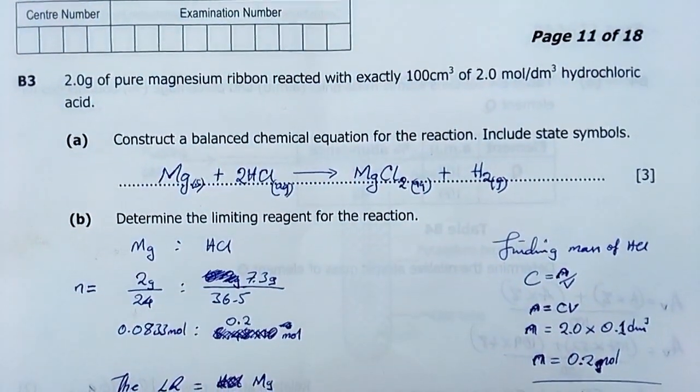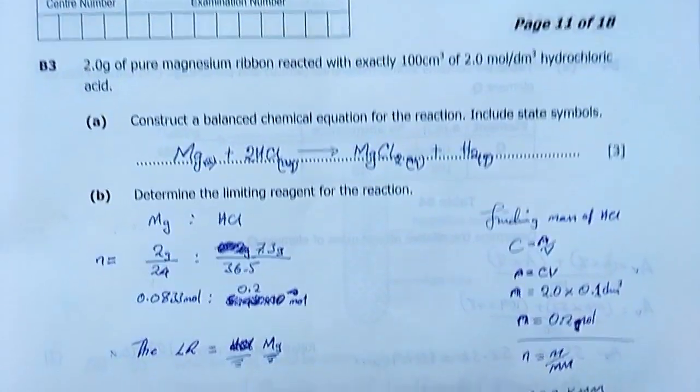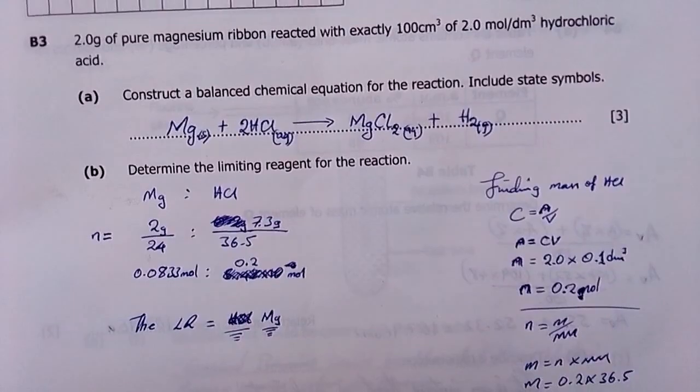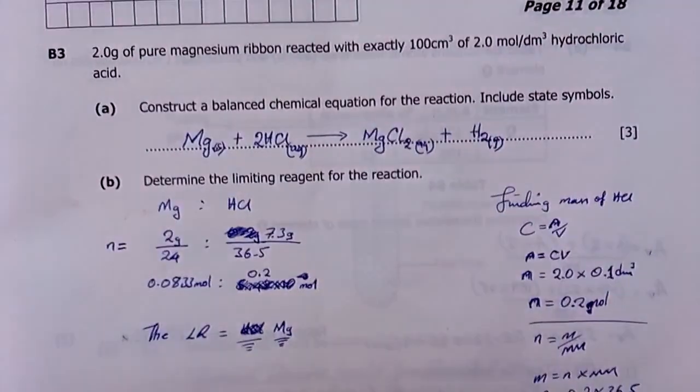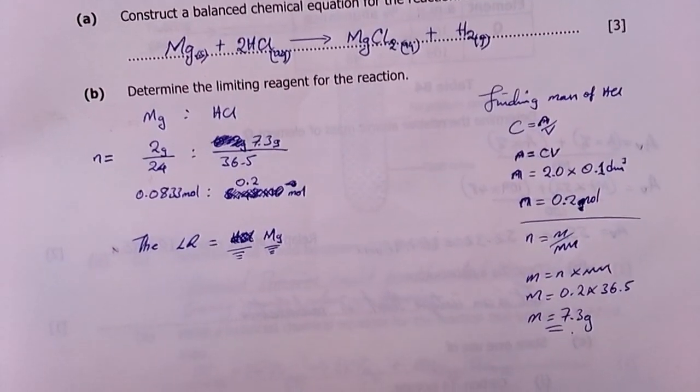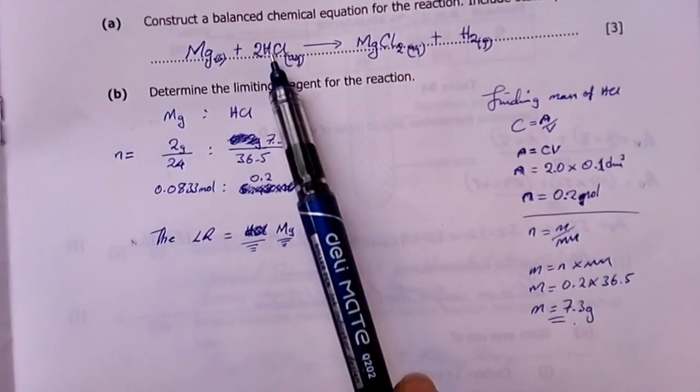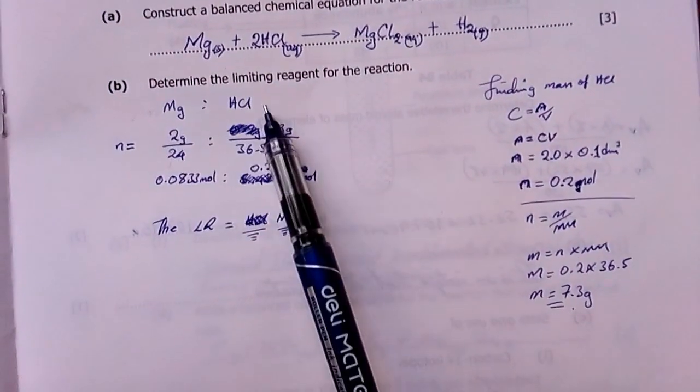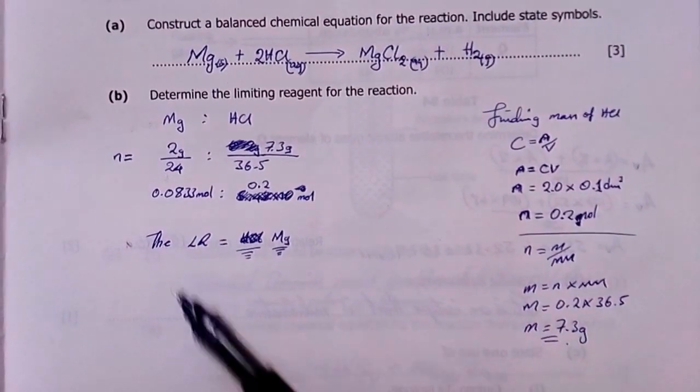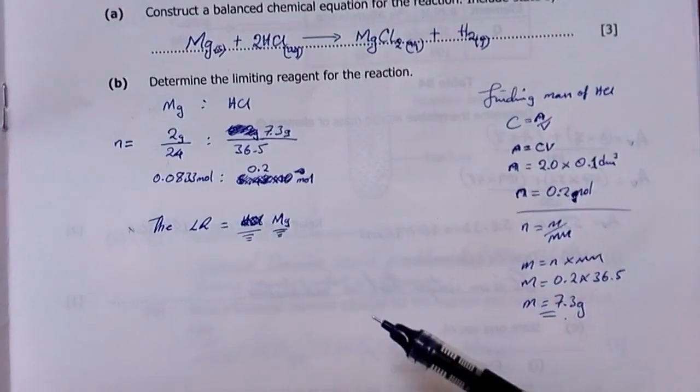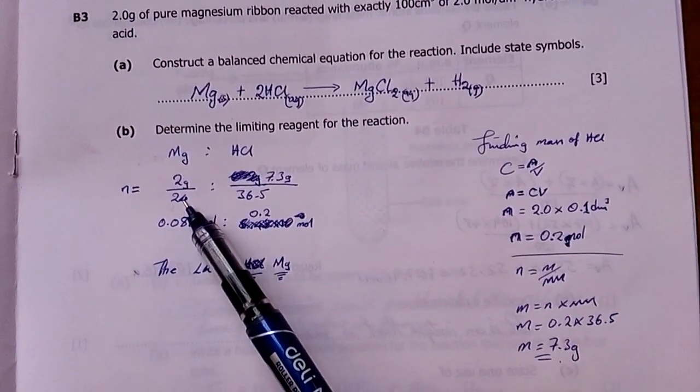The question reads: 2 grams of pure magnesium ribbon reacted with exactly 100 cubic centimeters of 2 molar hydrochloric acid. Construct a balanced chemical equation for the reaction. Include state symbols. Mg + 2HCl → MgCl₂ + H₂. Magnesium ribbon is solid, HCl is aqueous, MgCl₂ is aqueous, then gas there. Therefore, hydrogen gas is liberated.